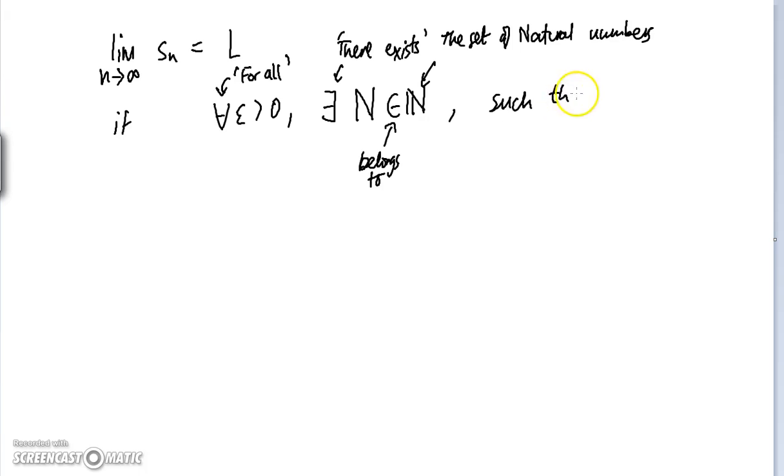Such that if little n is greater than big N, the terms of the sequence, the distance of the terms of the sequence after the big Nth term and our limit can be made less than epsilon. Notice we can do this for all epsilon.